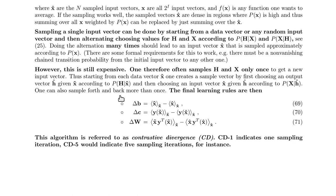This method is called contrastive divergence. You sample back and forth from the input layer to the hidden layer and back to the input layer and through the hidden layer again — the first two values go into the data expression and the second two go into the model expression. If you do this only once back and forth, it is called CD-1. If you go back and forth five times, that would be CD-5. CD-1 is quite popular because it is relatively cheap.